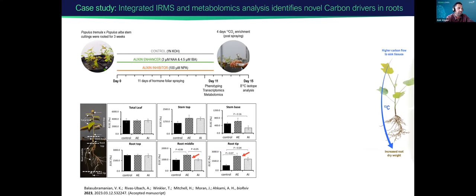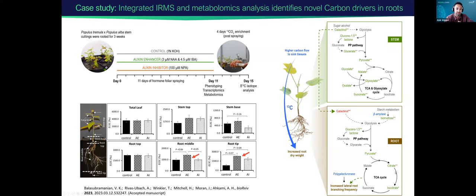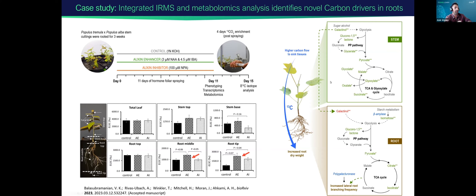Under auxin enhancement conditions, we observed higher concentration of carbon levels in the sink organs, indicating that photoassimilates are mainly transported from source to sink tissue under auxin enhancement conditions. In conclusion, we integrated phenotypic, transcriptomics, and metabolomics data with data from the carbon labeling approach, and postulated a model suggesting that source-sink carbon relationships in poplar could be fueled by specific metabolites like sugar alcohols or TCA cycle intermediates as key molecular drivers involved in importing carbon from shoot to below ground. Overall, the carbon labeling and IRMS technology is really powerful, particularly when integrated with omics capabilities like transcriptomics or metabolomics. I'm happy to pass the stage to Sophie.